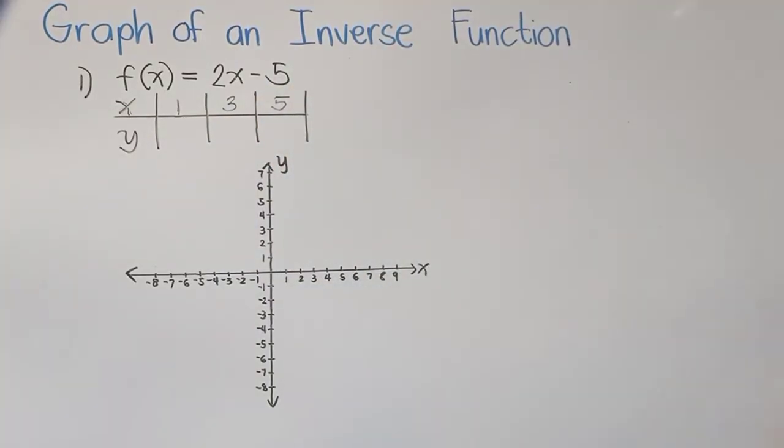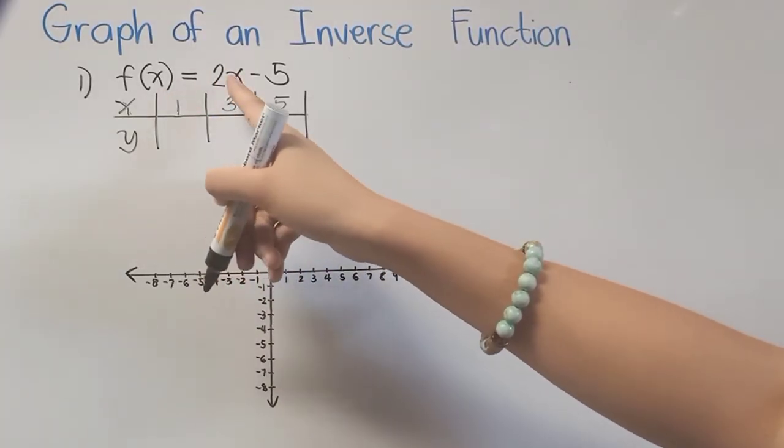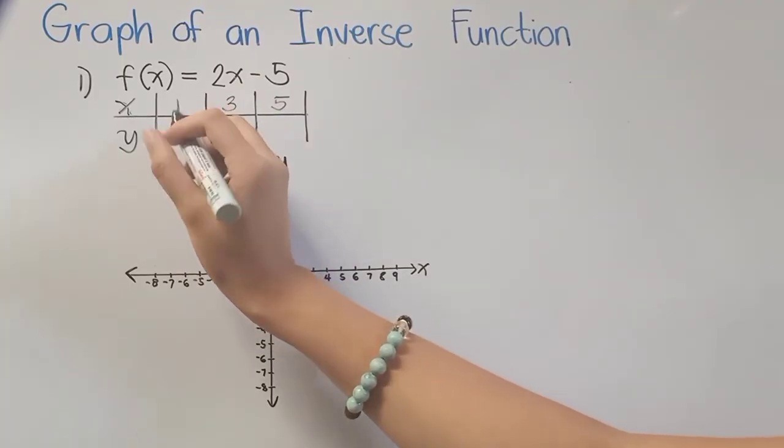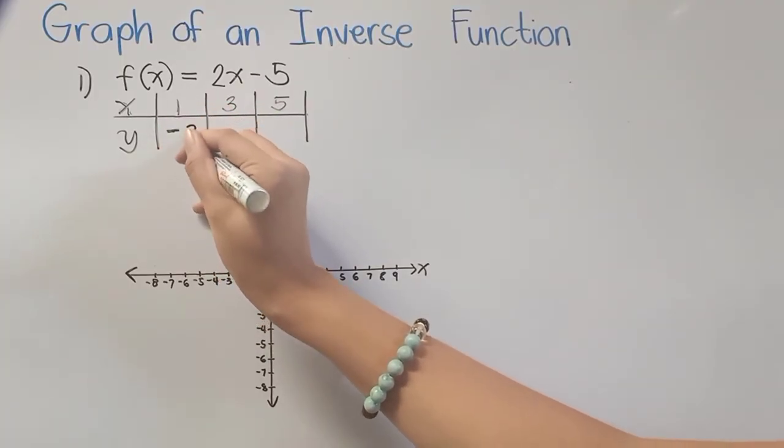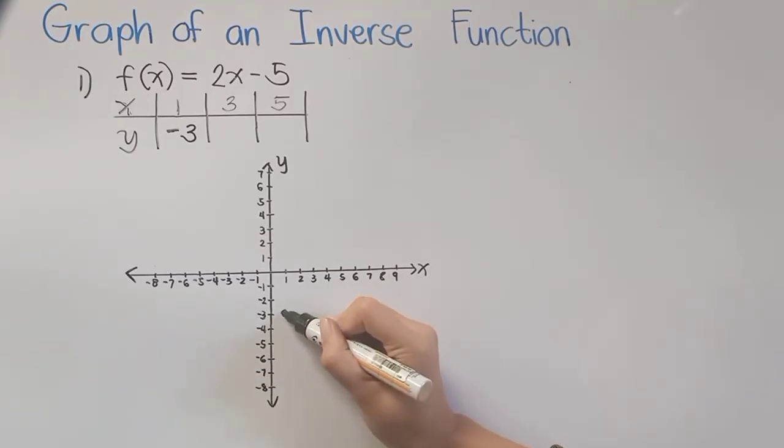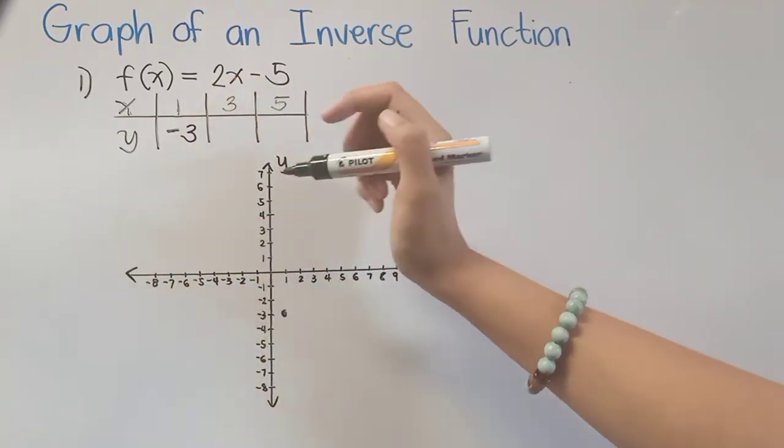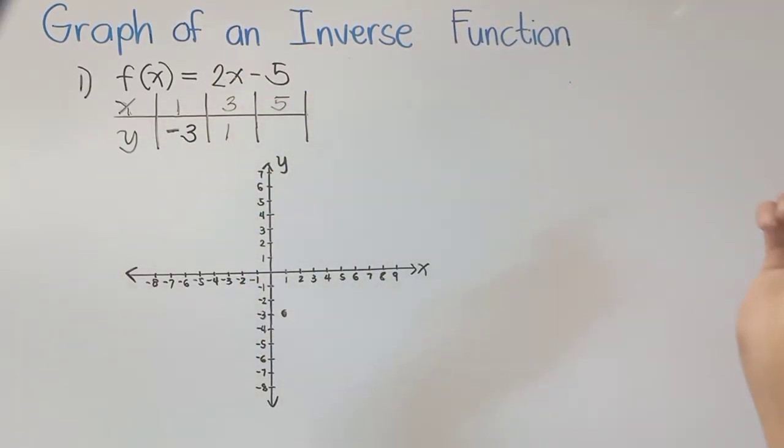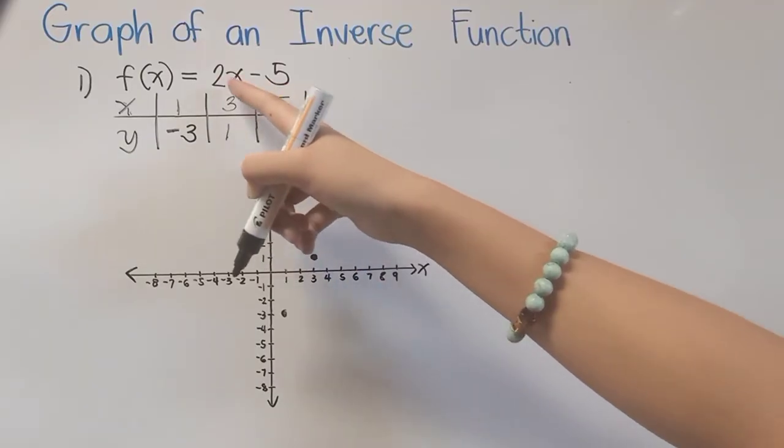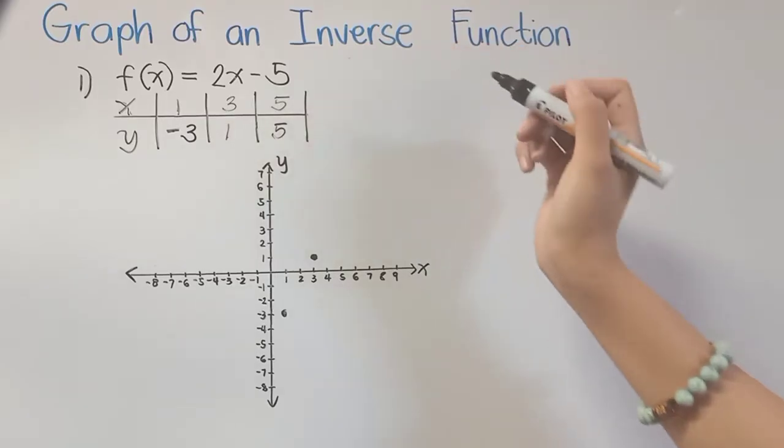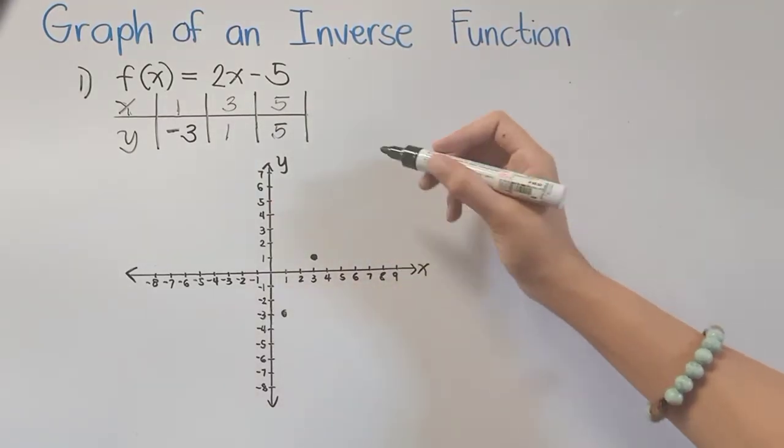So to get the y here, let us substitute our x values to the given. 1 times 2 is 2 minus 5 is negative 3. Plotting that one first, it would be in this point. Next, let's proceed to 3. 2 times 3 is 6 minus 5, it's positive 1. Plotting that one again, it's this point. Lastly, if we substitute 5, we have 2 times 5, 10 minus 5, it's 5. So our last point is 5, 5.